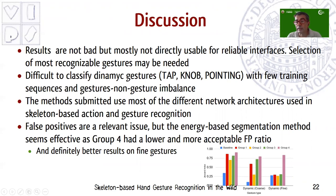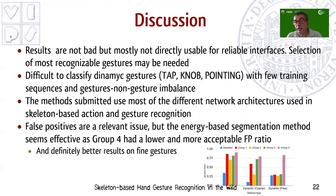The methods proposed by the different groups cover a wide range of network architectures proposed in the literature for skeleton-based gesture recognition. It appears that graph convolutional methods perform best, although it is necessary to decouple the effect of the network architecture from the effect of the detection model. There also seems to be an architectural advantage related to improved recognition of fine gestures.